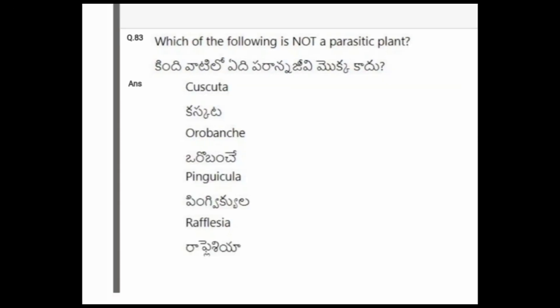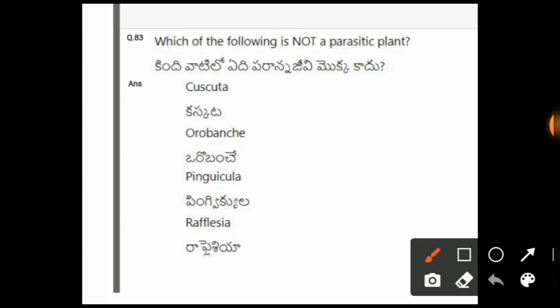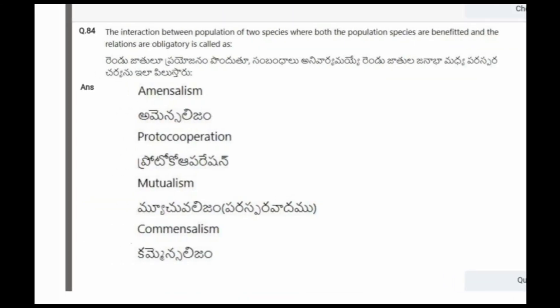Next question: Which of the following is not a parasitic plant? The options are Cuscuta, Orobanche, Pinguicula, Rafflesia. The correct option is Pinguicula.